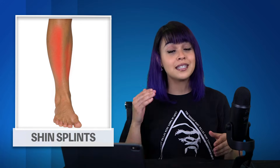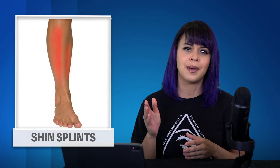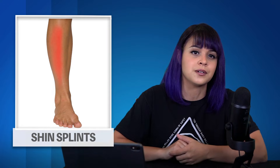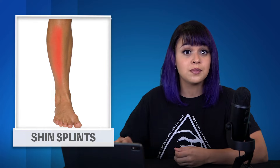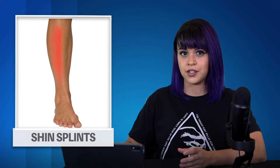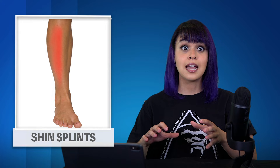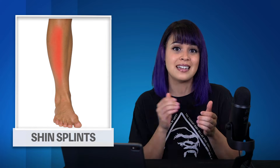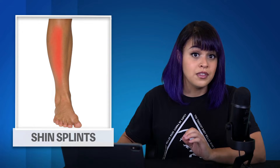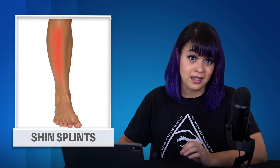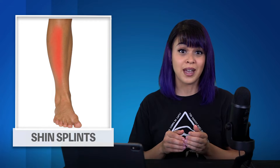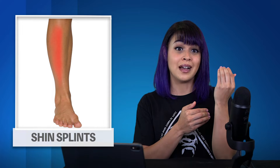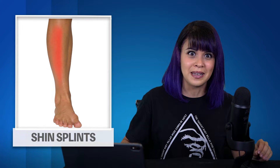Although you can also get posterior shin splints which occur on the backside — the most common one of course is anterior. In the mildest of cases shin splints are an inflammation of the fascia. Fascia is the connective tissue or net that encases the muscle and connects it to the bone, the tibia. In the worst of cases, the fascia is under so much stress that it actually separates from the tibia, which is really painful.